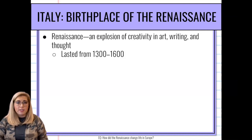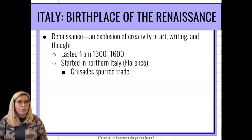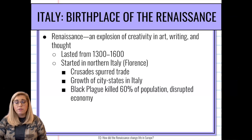It lasts from about the 1300s to the 1600s and it starts, as you can see in the title of the slide, in Italy — most prominently in the city of Florence, and then it spreads to different parts of Italy. Why did it start in Italy? The Crusades spurred a lot of trade, so people were moving around. The growth of city-states started to explode in Italy, and the Black Plague killed about 60% of Italy's population, really disrupting the economy. So there was a need for change, and Italy was the best place for it to take off.